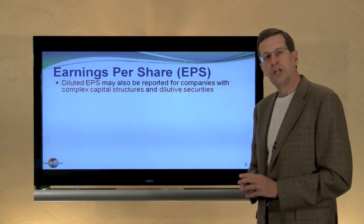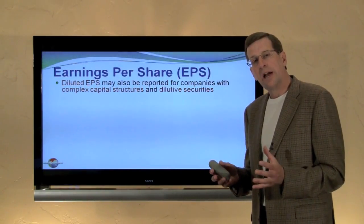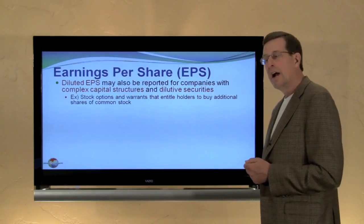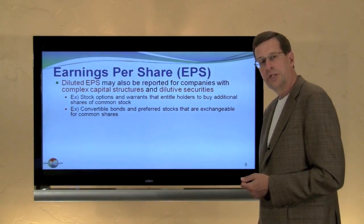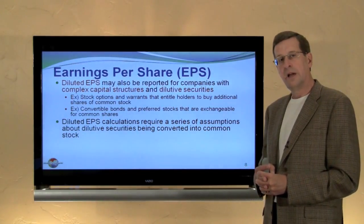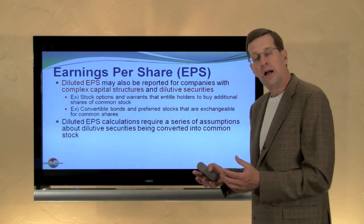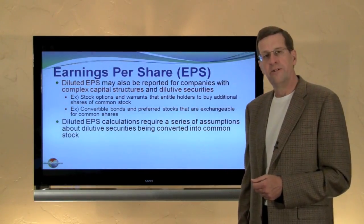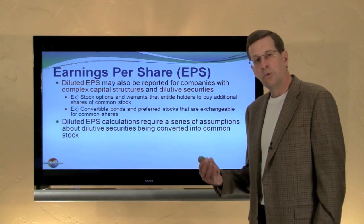Some companies need to present a dual earnings per share structure. In addition to the basic earnings per share calculation, they would also need to calculate diluted earnings per share. These are companies that have potentially dilutive securities outstanding — a complex capital structure. For example, a company might have stock options and warrants that entitle holders to buy additional shares, or there may be convertible bonds or convertible preferred shares that can be exchanged for common stock. Diluted earnings per share calculations require a series of assumptions about dilutive securities being converted into common stock — we assume convertible preferreds are converted, convertible bonds are converted, and so on. Anytime that causes a reduction or dilution in earnings per share, we make that assumption to arrive at the revised diluted earnings per share numbers. So for companies with complex capital structures, you can expect to see two earnings per share numbers: the basic number as well as a diluted earnings per share number.